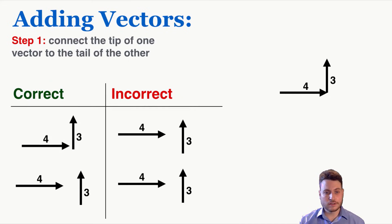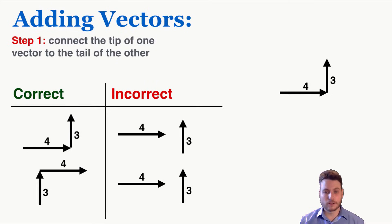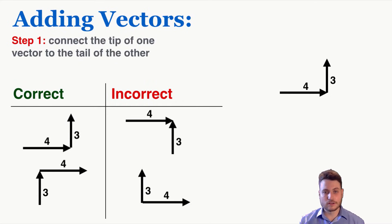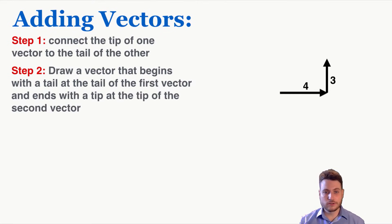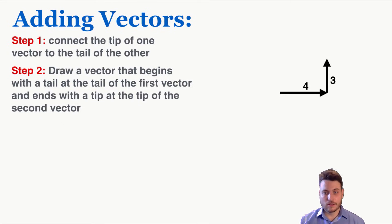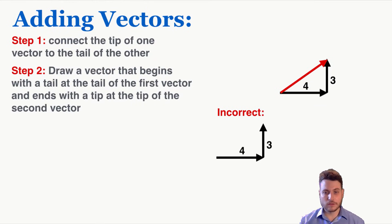You can see that two ways of connecting tip and tail are correct and two are incorrect — the incorrect connections are not how you use the tip-to-tail method. Step two is to draw a vector that begins with a tail at the tail of the first vector and ends with the tip at the tip of the last vector. So if I draw that for the 4 and the 3, I get a new vector that starts at the tail of the first and ends at the tip of the last. Make sure you're drawing from the tail of the first to the tip of the last.